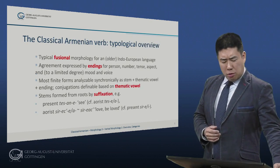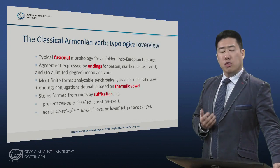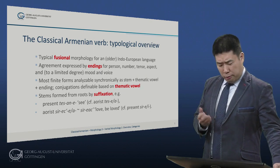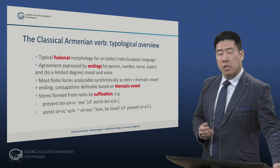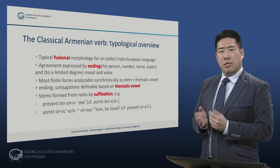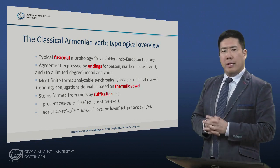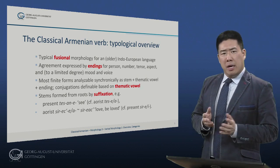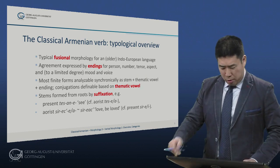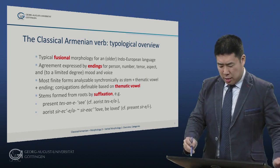Classical Armenian shows typical fusional morphology in its verb, typical for an older Indo-European language. Agreement is expressed by endings, as in other older Indo-European languages. Agreement is expressed for person, number, tense, aspect, and to a limited degree, mood and voice, as we will see.